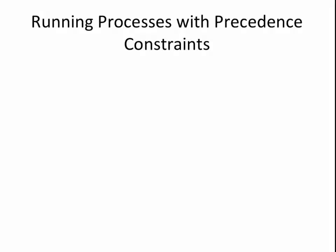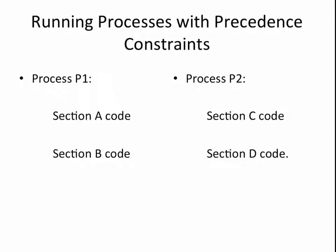Now, let's consider two processes, P1 and P2, that run concurrently. P1 has two sections of code, where section A is followed by section B. Similarly, P2 has two sections, which are C followed by D.